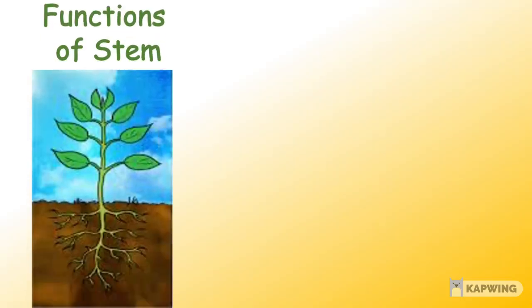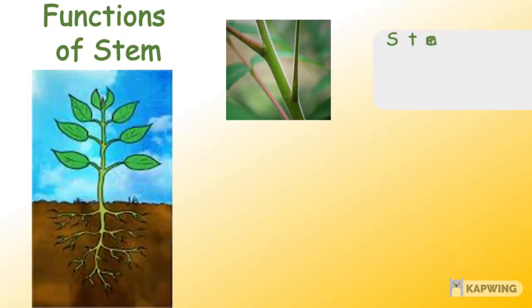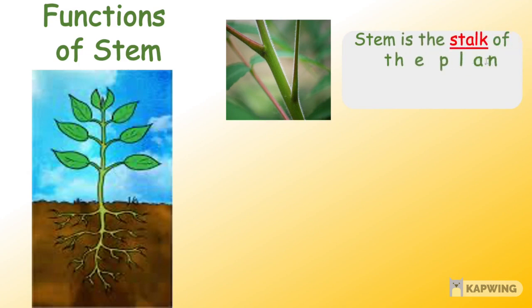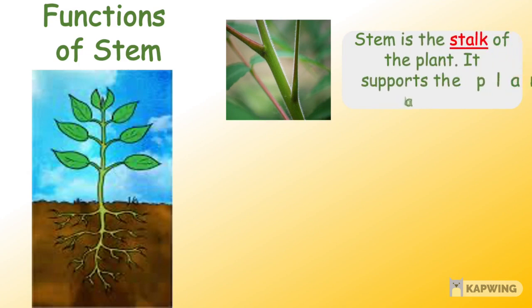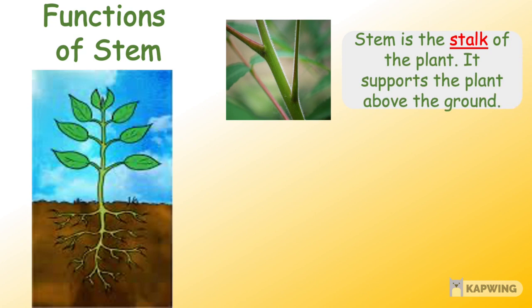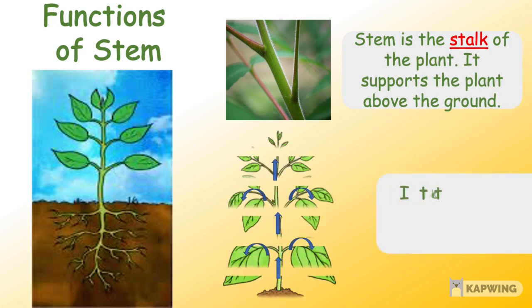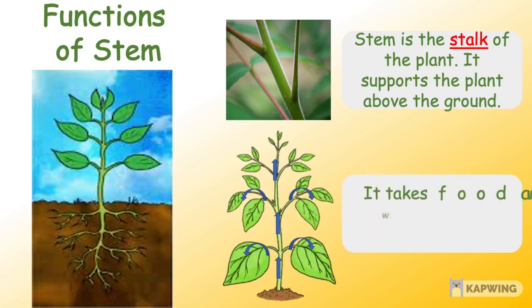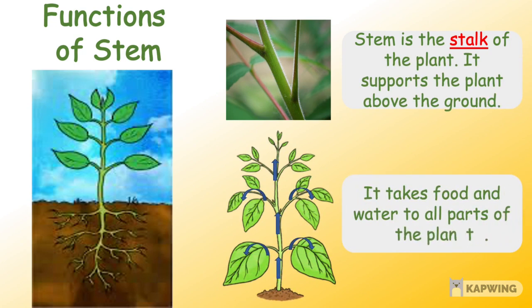Next we have the stem. The stem is the stalk of the plant — it supports the plant above the ground. It also takes food and water to all parts of the plant.